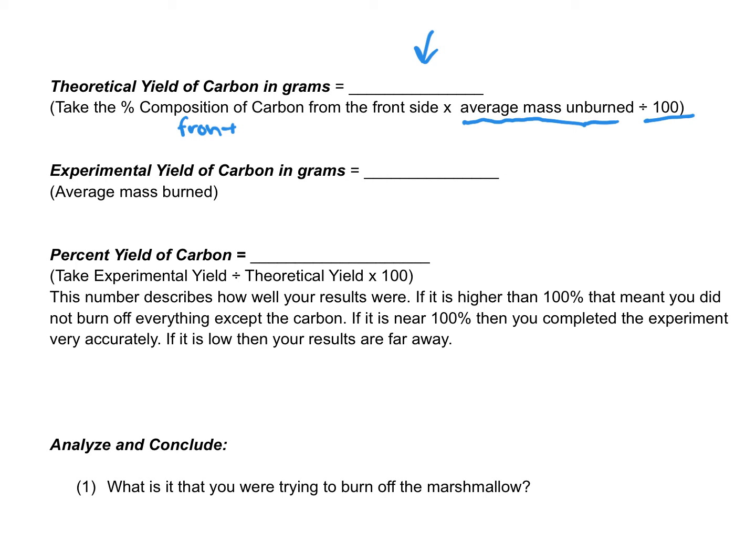Now let's go ahead and look at the next problem. It is the experimental, and it says the average mass burned, which is this number. Not bad so far. And now we have to figure out your percent yield. You're going to take the experimental, so this one, divide it by the theoretical, which is this one, and then times it by 100, and then you get this one.